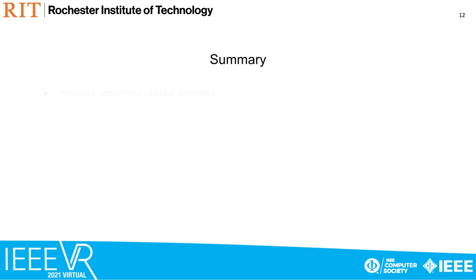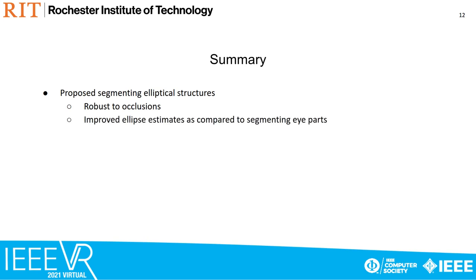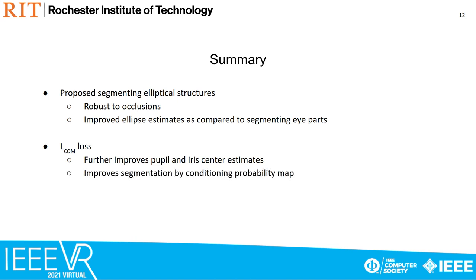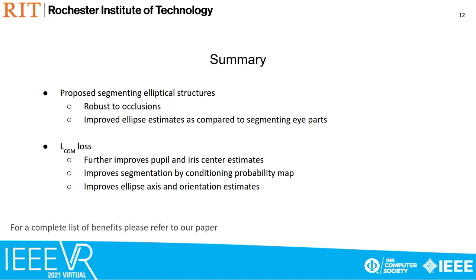To summarize, LSEC proposes segmenting elliptical structures as opposed to I-parts. We show that this formulation is robust to occlusions. LSEC also generates improved ellipse estimates. This work utilizes a center of mass loss function, which further improves pupil and iris center estimates, improves segmentation performance by conditioning the output probability map, and in turn improves ellipse axes and orientation estimates. For a complete list of benefits from the LSEC protocol, please refer to our paper.